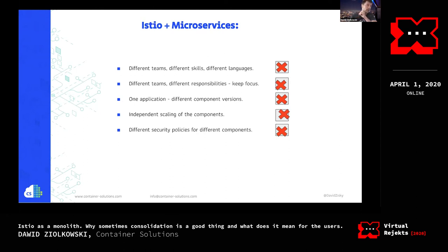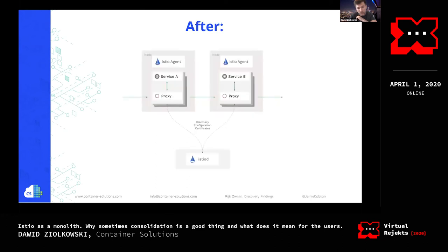They realized there was no reason to keep doing microservices, and that's why they decided to make this change. That's how Istio architecture looks right now: after consolidation, there is one single binary called Istiod — which stands for Istio daemon. They also did it pretty smart: they basically consolidated all of the microservices into one. They didn't rewrite the whole thing from scratch — they just put it all into one box, as a first step.